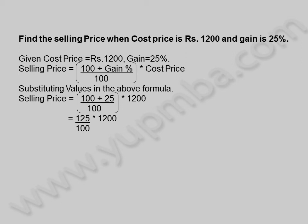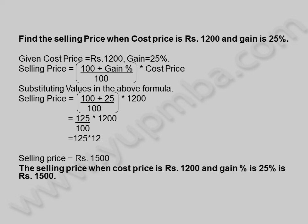That is equal to 125 by 100 into 1,200, which equals 125 into 12. Selling price is equal to 1,500 rupees. The selling price when cost price is 1,200 rupees and gain percentage is 25 percentage is 1,500 rupees.